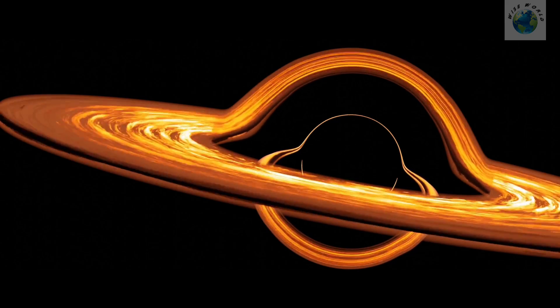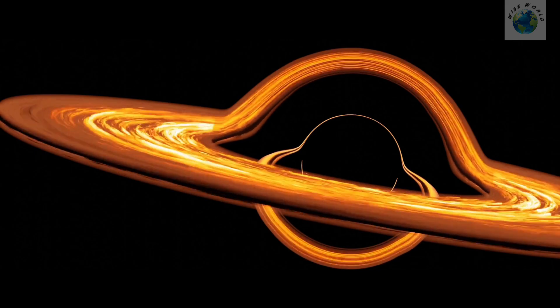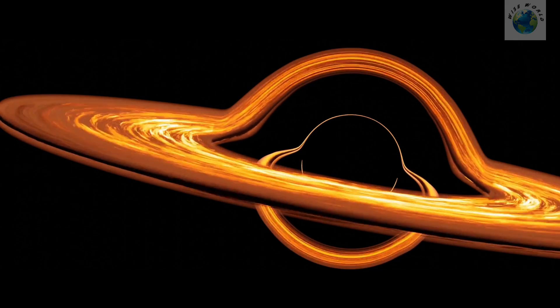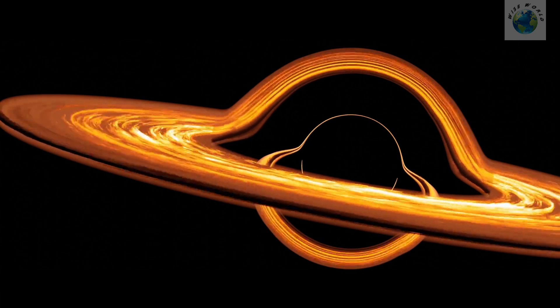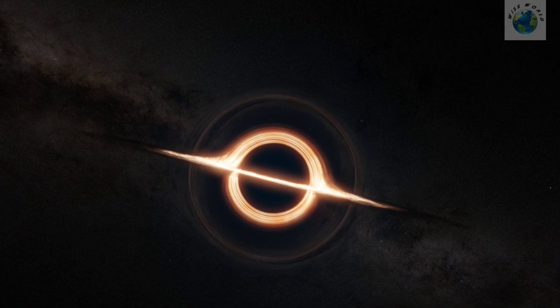Without the outward pressure from fusion, the star's core collapses under its own gravity. This collapse is incredibly violent, leading to a supernova explosion that can outshine entire galaxies. If the core is massive enough, the collapse continues until it forms a black hole.